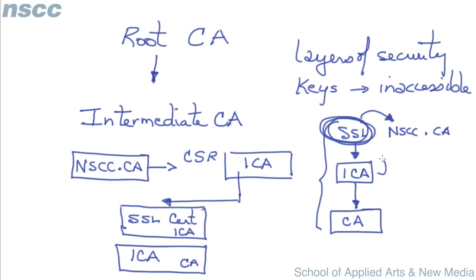What we're proving is that this certificate is trusted — that a browser can trust this is the organization nscc.ca. An intermediate CA is verifying that, and a root certificate authority is validating the ICA. So we have that chain that a browser needs to check.